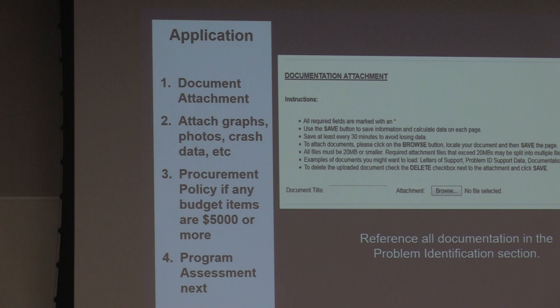Any documentation you want to attach, go to this page — your next page after the Problem ID. Your procurement policy is needed if you're buying anything that costs $5,000 or more. If you're buying anything $5,000 or more, don't buy it until we give you a letter saying you can, even if we get your grant approved. You'll hear that again today.